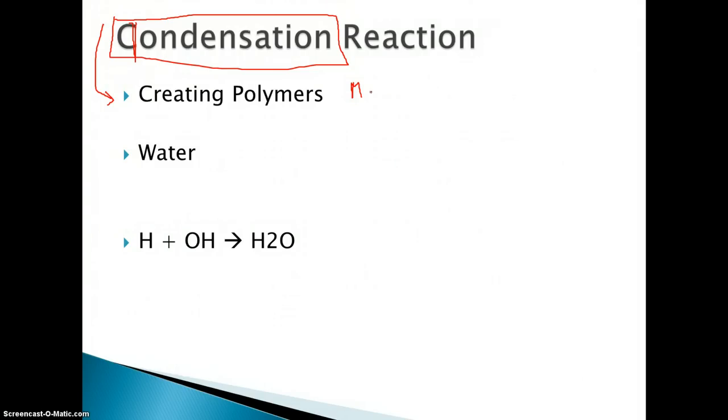So condensation takes monomers and if you need review on what all this is, please check out my other videos on organic chemistry. But monomers yield to polymers, so this creates polymers. It takes tiny particles and makes them big particles. When a reaction occurs between these monomers so that they can become big particles, water is the by-product.